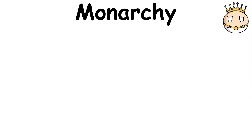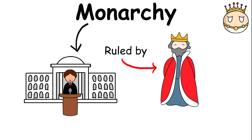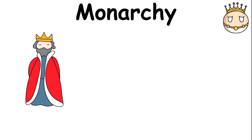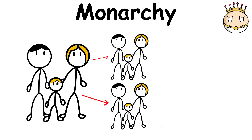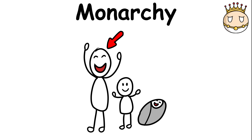A monarchy is a type of government ruled by a monarch, which is often a king or a queen. The monarch's role is passed down through the same family, from generation to generation, often going to the oldest child.